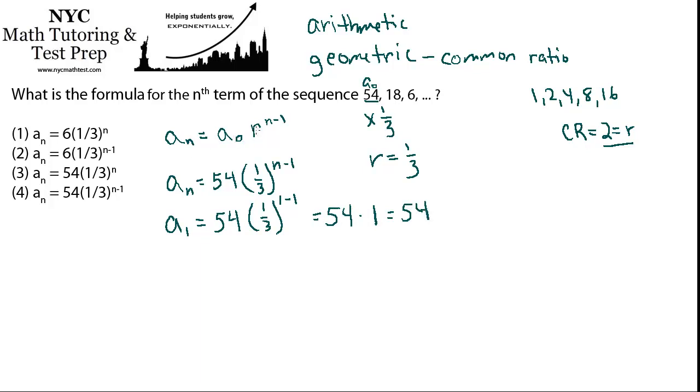Whatever the a_0 term is, since the first term is raised to the n minus 1, that's always going to be 0. r to the 0 is always going to be 1, and that's why the first term, a_0, equals a_1. That's kind of how it works.